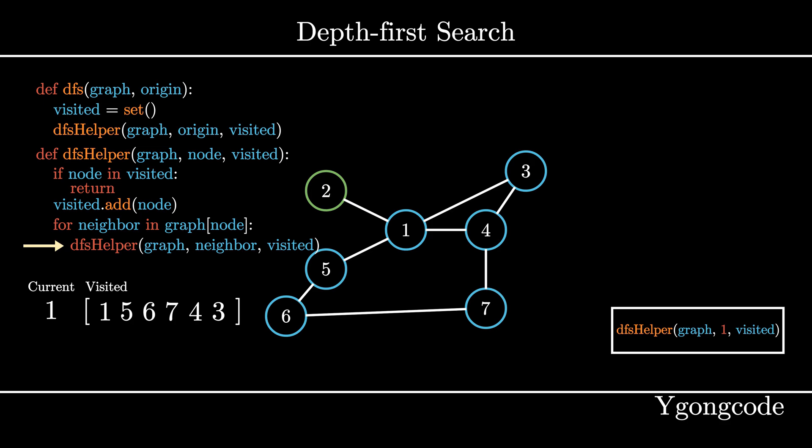Now, at dfsHelper 1, we find its last neighbor, node 2, and call dfsHelper on node 2 and add it to the call stack.